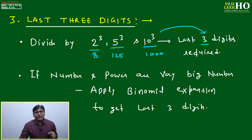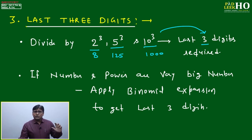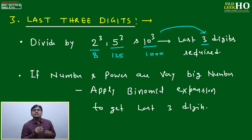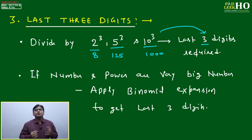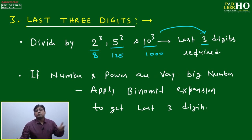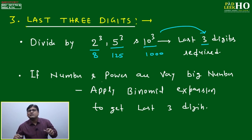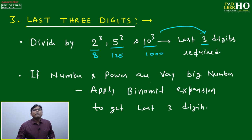Finding the last three digits requires binomial expansion. However, the numbers given in questions won't be very complicated — they'll be near to some thousand, or near to zero, making calculations easy. Otherwise it would be a BSc Mathematics question, not an aptitude question. MBA exams don't require extreme academic computation.